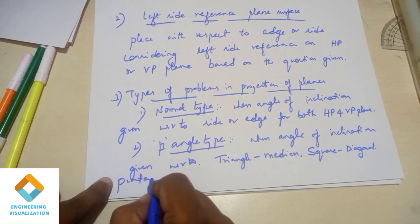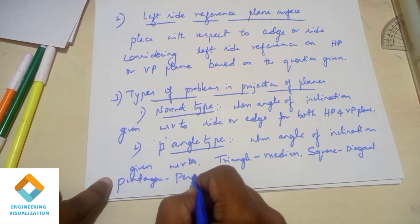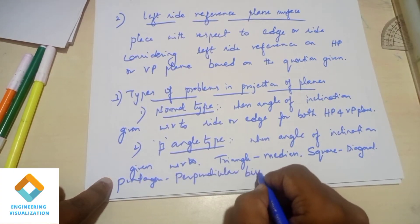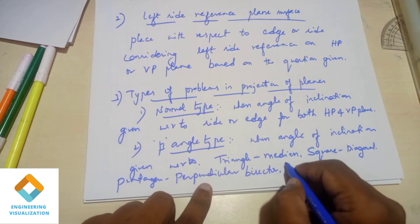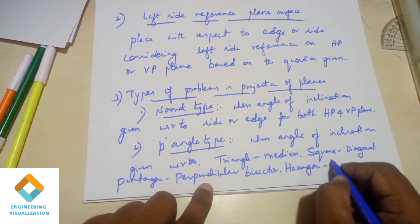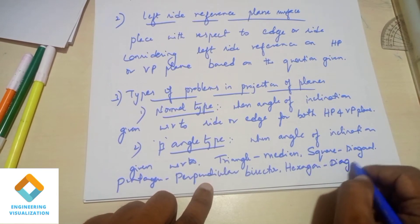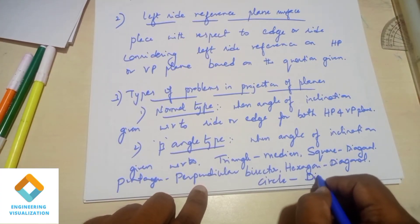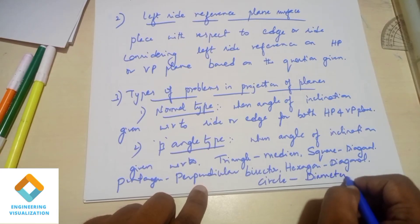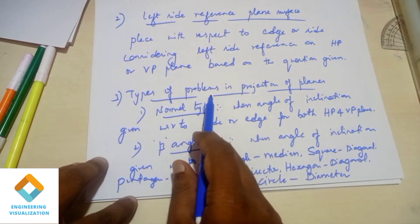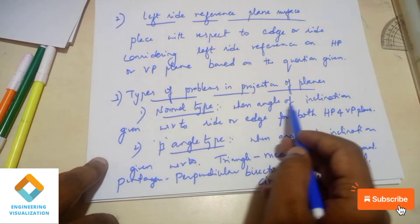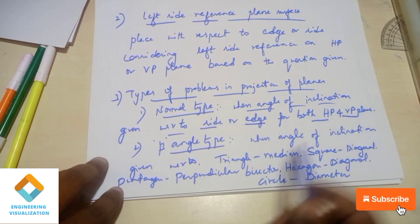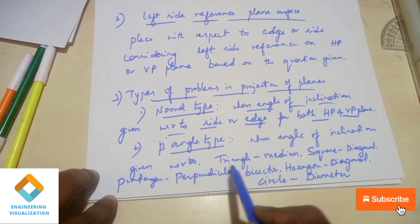Step by step: first, what is S2 dimension - with respect to edge or corner? Then check inclination. Look for particular terms: triangle - median; square - diagonal; pentagon - perpendicular bisector; hexagon - diagonal; circle - diameter. Identify these words in the question. This beta angle type is easy to identify.